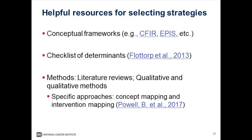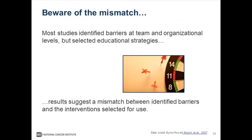Helpful resources for selecting strategies include existing conceptual frameworks like the CFIR — the Consolidated Framework for Implementation Research — or models that help you think about phases of implementation like the exploration, preparation, implementation, and sustainment model. Consider the checklist of determinants put forth by Flottorff and colleagues. You could also use literature reviews or qualitative and quantitative methods to outline specific determinants. Methods like concept mapping and intervention mapping have been described by Byron Powell and colleagues. A note of caution: be aware of the mismatch between identified determinants and selected strategies, as studies often identify barriers at the team and organizational level but end up selecting only educational strategies.